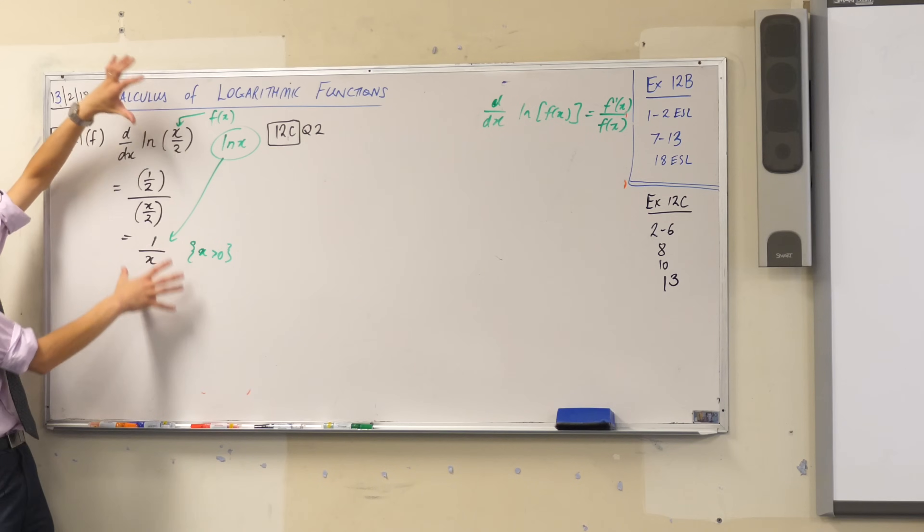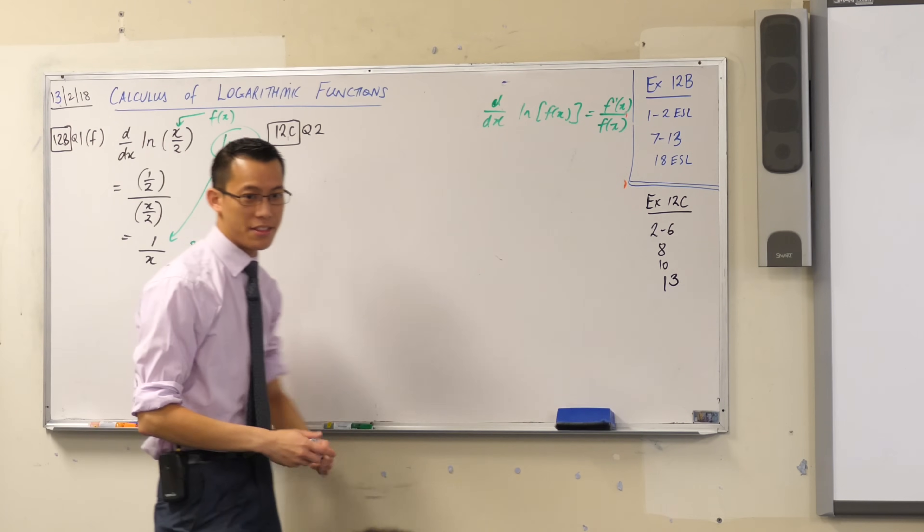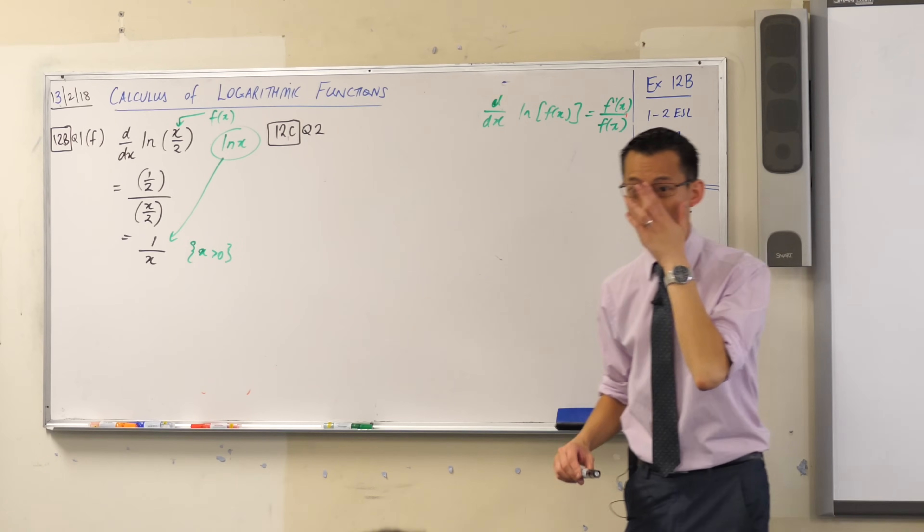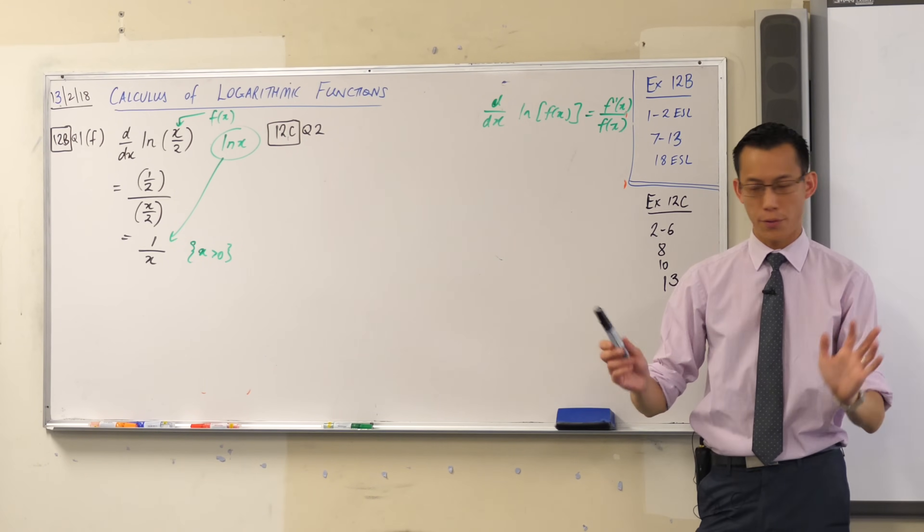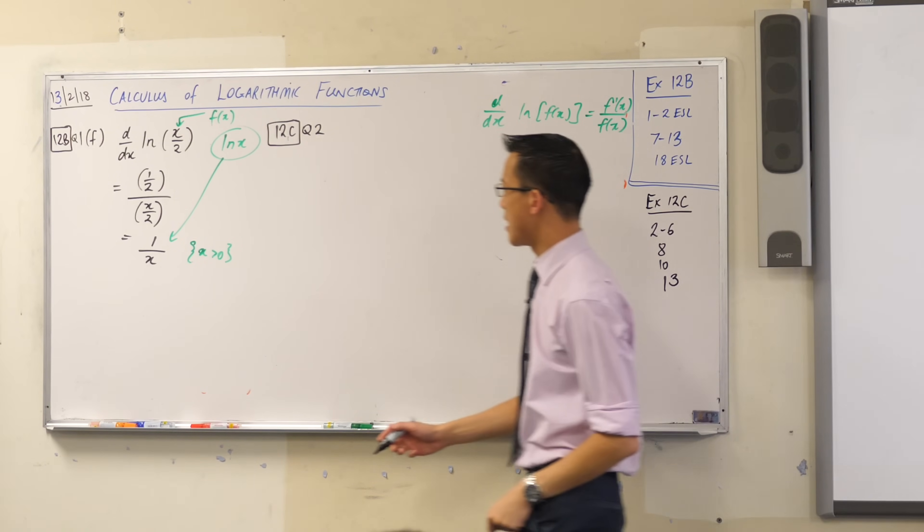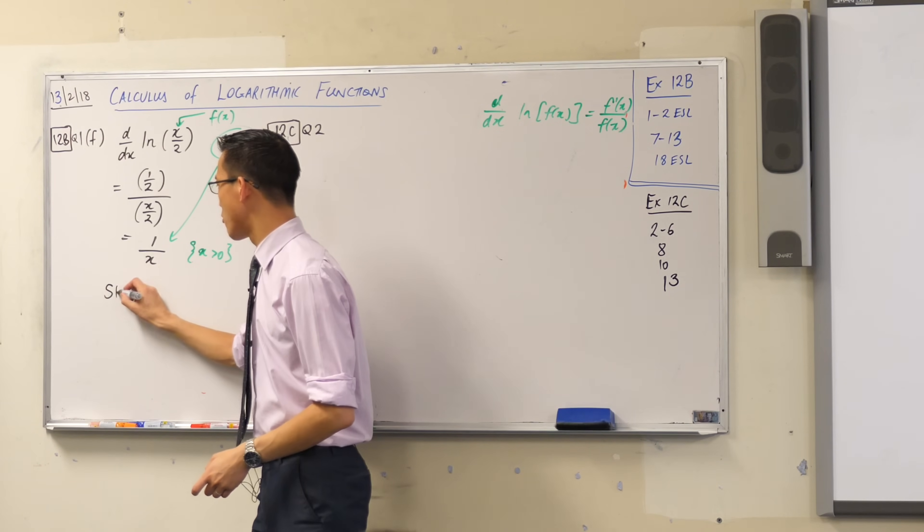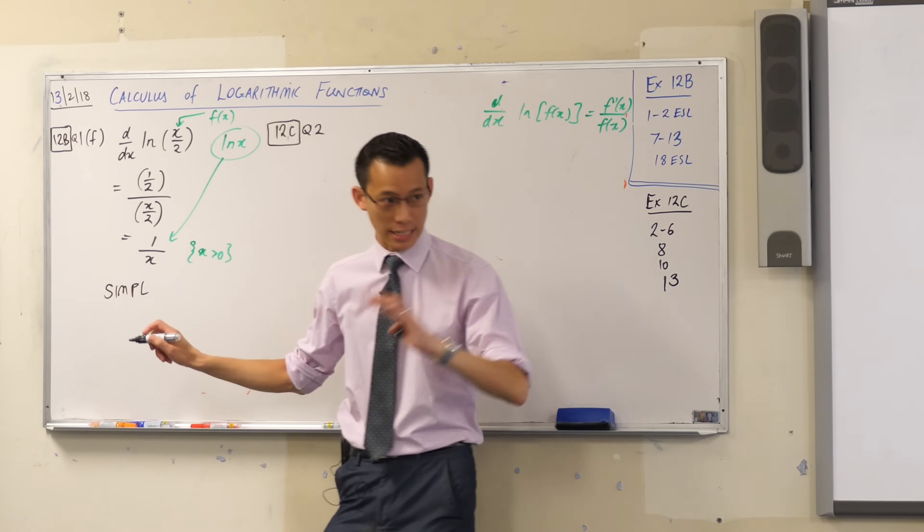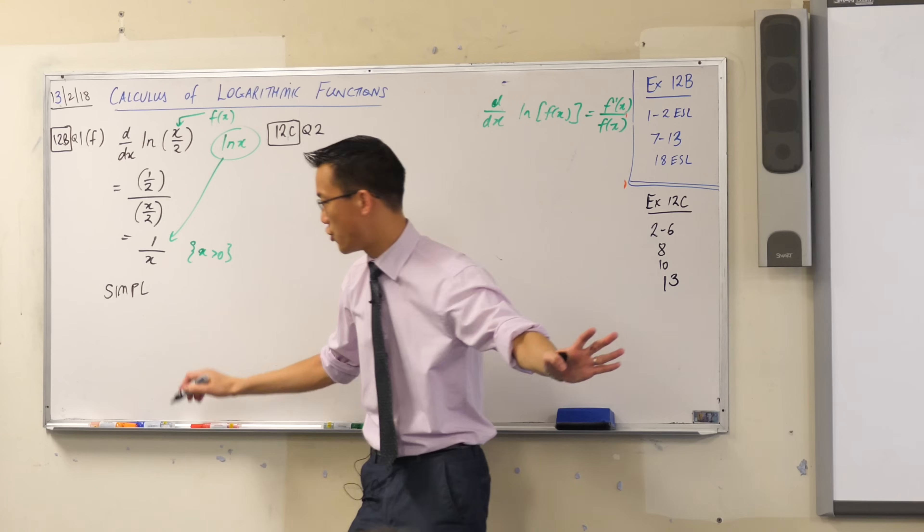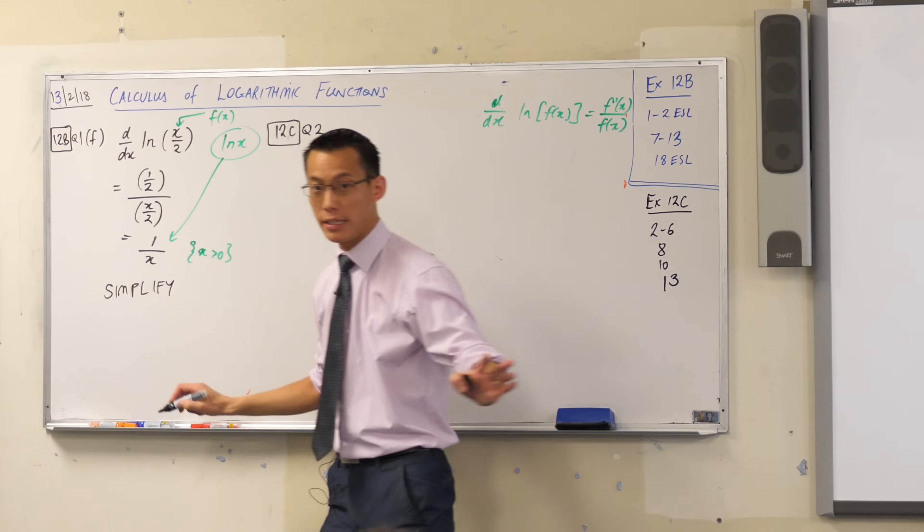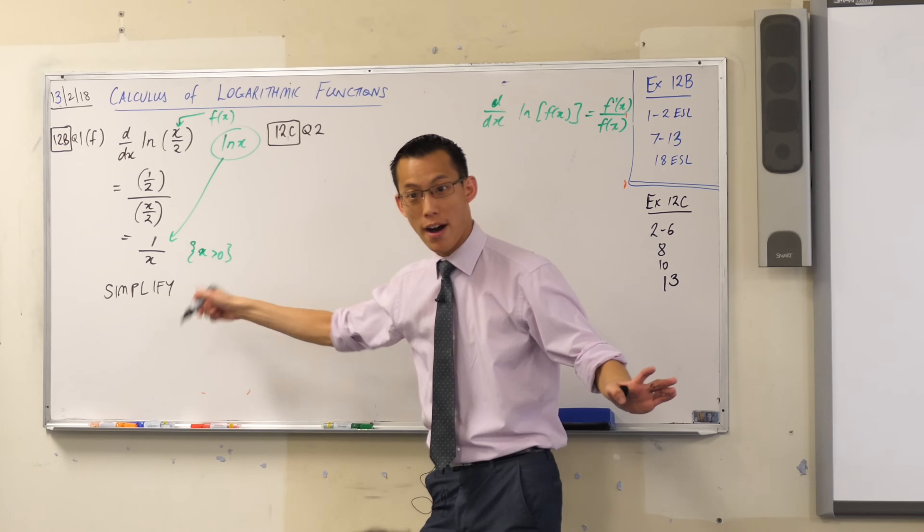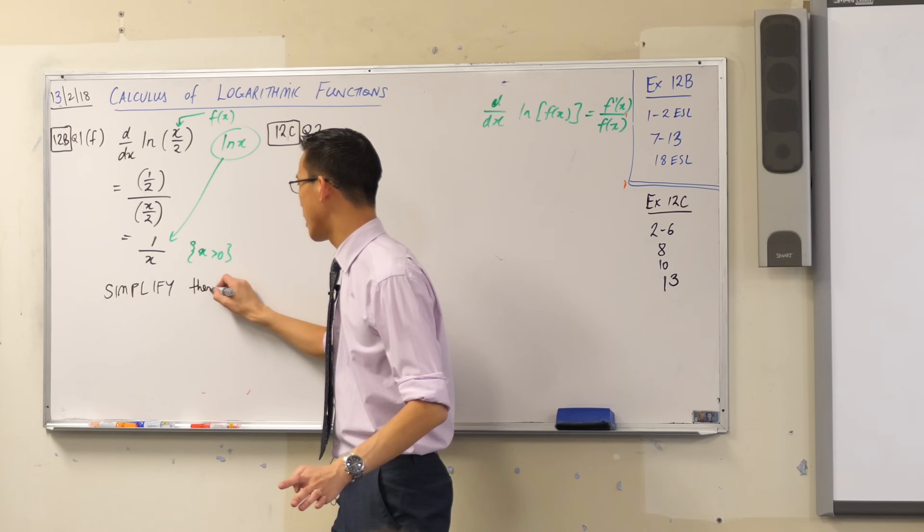Now, how can we show this using what we have over here? This is the scenic route. This is a long way of doing it. There is a simpler way. An overall principle for you, this is so important, it's worth writing. Rather than going straight to calculus, straight to differentiating, if you possibly can, simplify first, then differentiate.